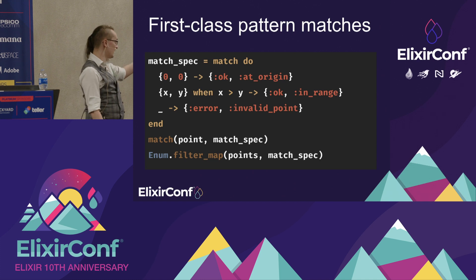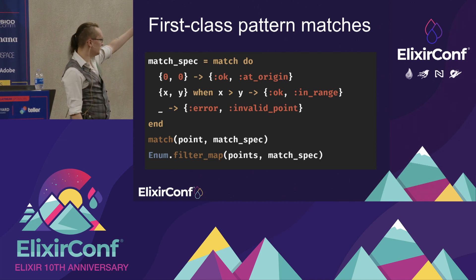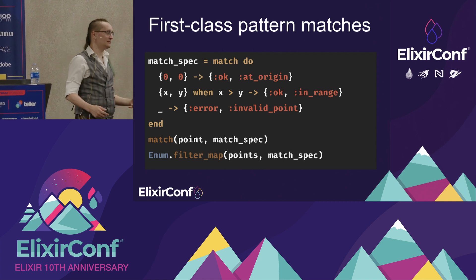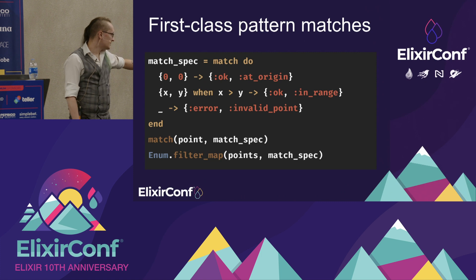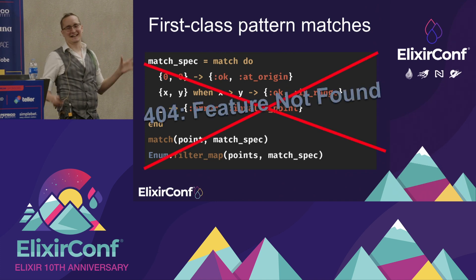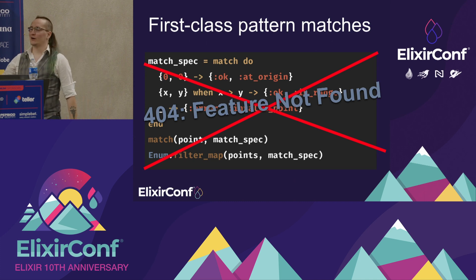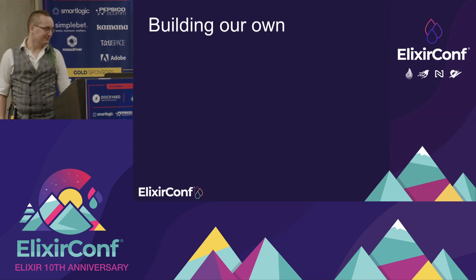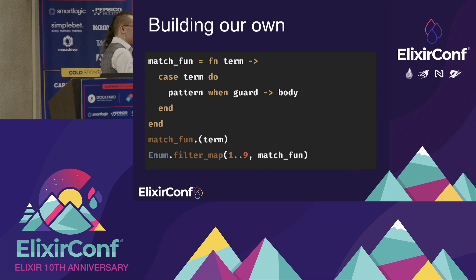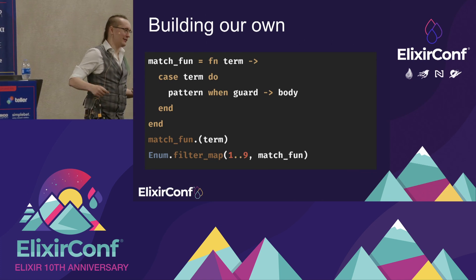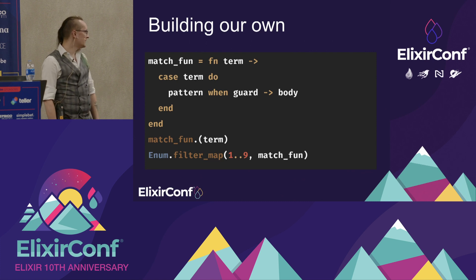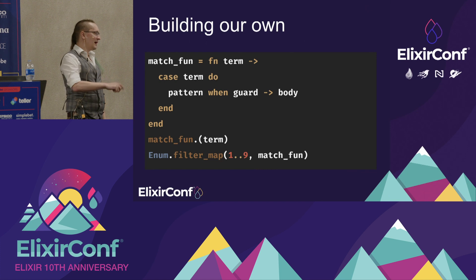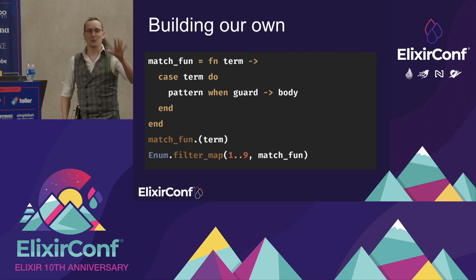First-class pattern matches look very much the same. Instead of case, we have this match keyword, and you're not matching against anything yet — you're just specifying the match you want to do later. You throw that into a variable and match when you want, passing it to other functions. The cool thing is that first-class pattern matches don't actually exist — this isn't real syntax. I made it up for this conference. But we're going to build our own. Some of you might say: just throw that pattern match into a first-class function and pass it around. And you're absolutely right, and it works.